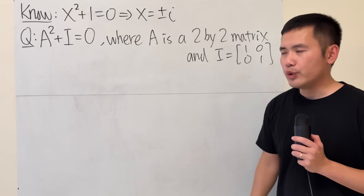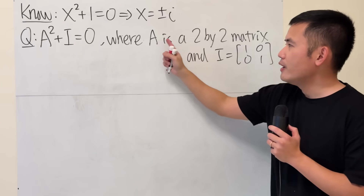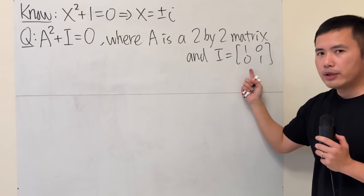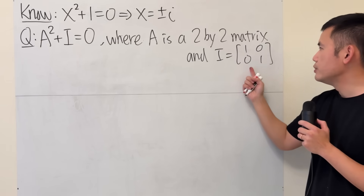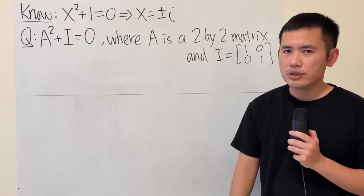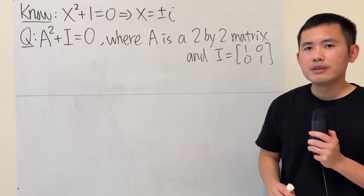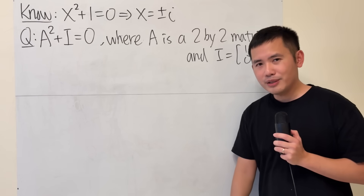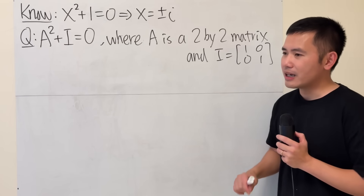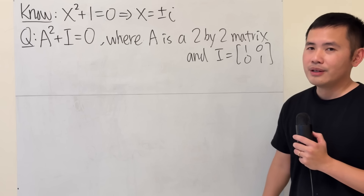But what if we have A squared plus capital I equal to 0, where A is a 2 by 2 matrix and capital I is the 2 by 2 identity matrix — which is [1, 0; 0, 1] — and the 0 means the zero matrix [0, 0; 0, 0]. Are we going to end up with a non-real matrix? We could, but we don't have to. In fact, there are infinitely many solutions, including both real and non-real matrices.